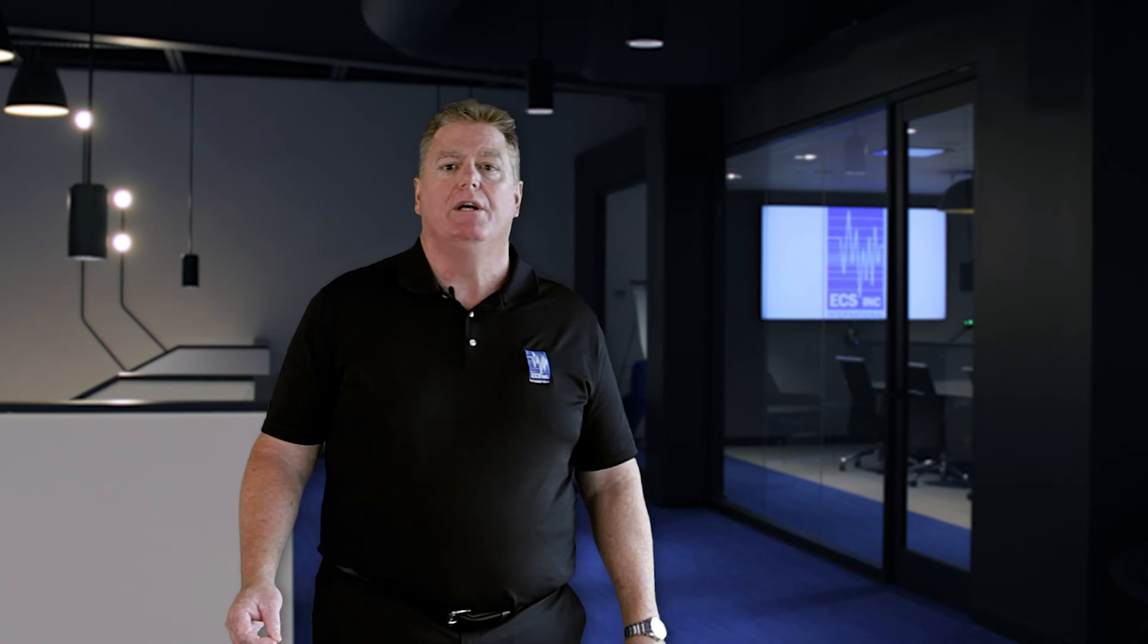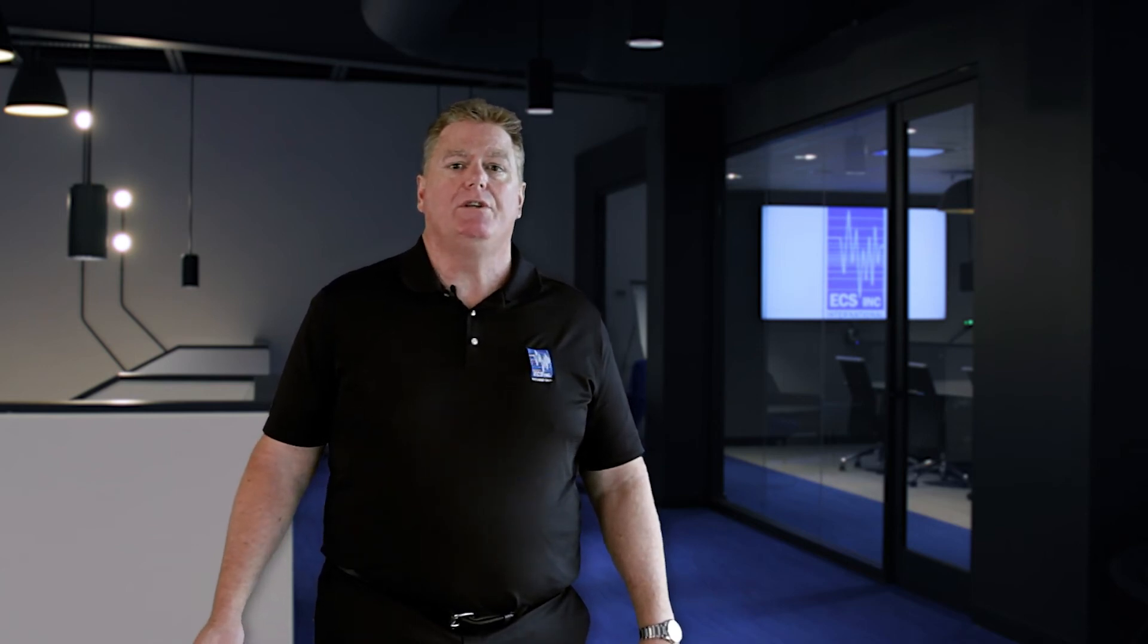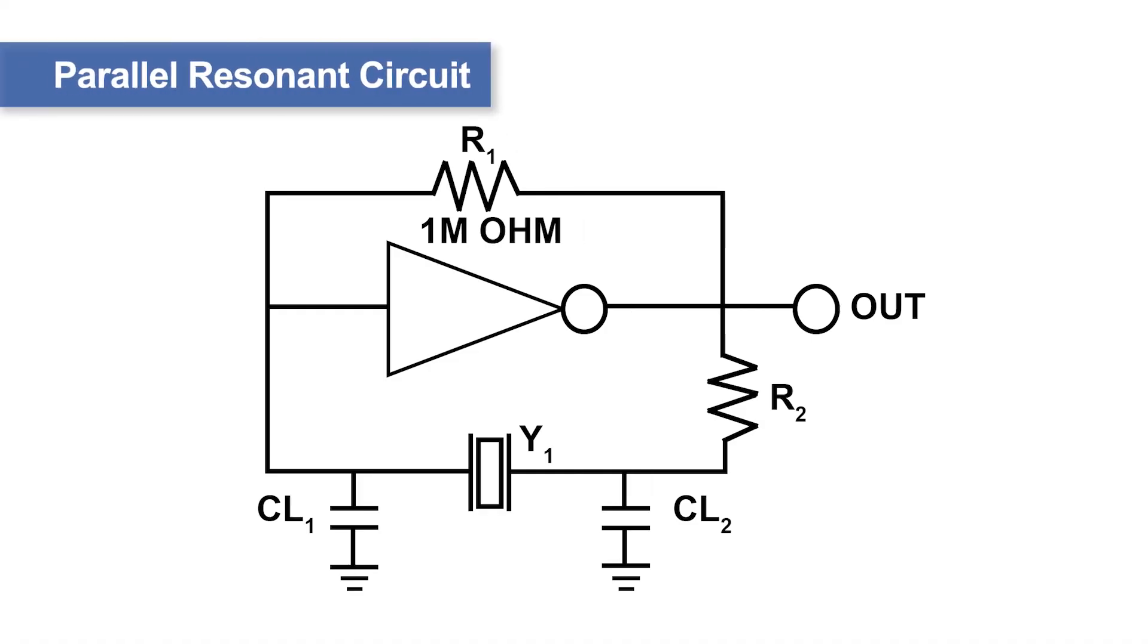These circuits do not offer routes other than through the crystal unit to complete the feedback loop. In the occurrence of crystal unit failure, the circuit will no longer continue to oscillate. A simple illustration of a parallel resonant circuit is shown.